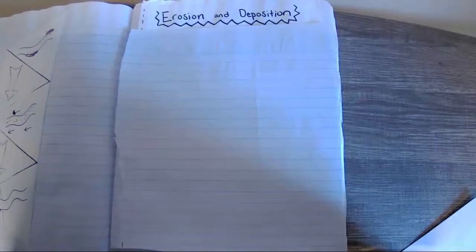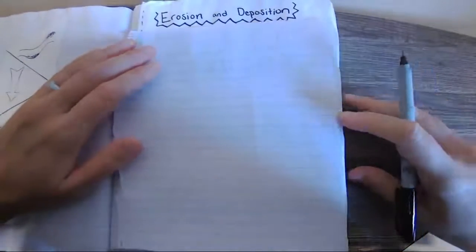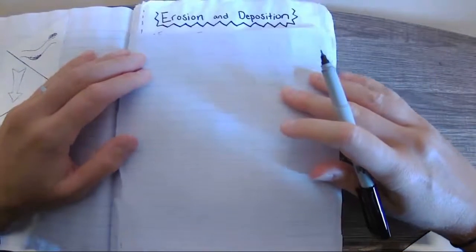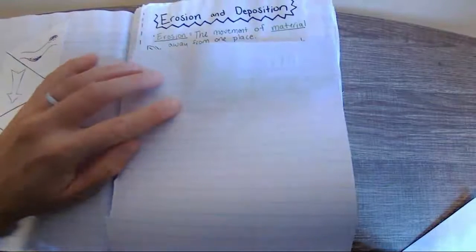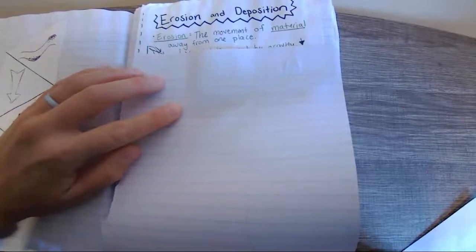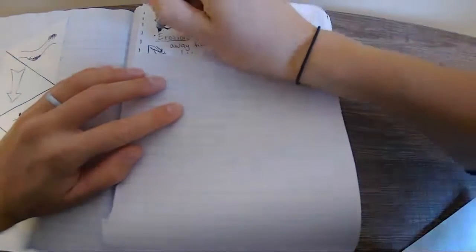All right, so here we have our notes on erosion and deposition. And these are ones you should have glued in your notebook on Thursday, right before our test. So hopefully you have them done. A good thing to take note of when you're taking notes is when you see something highlighted, that means it's a definition. So that's probably going to be an important one. So the first one says erosion.